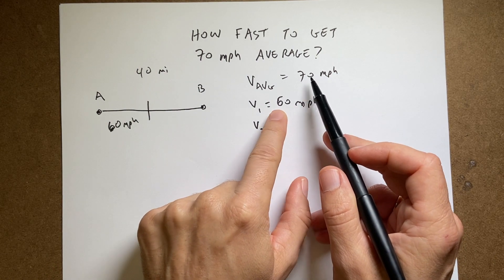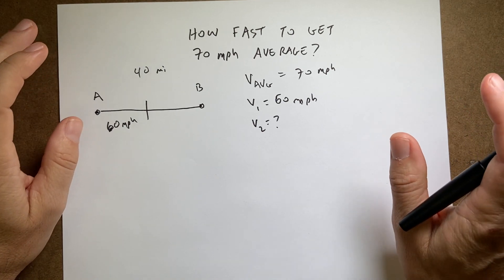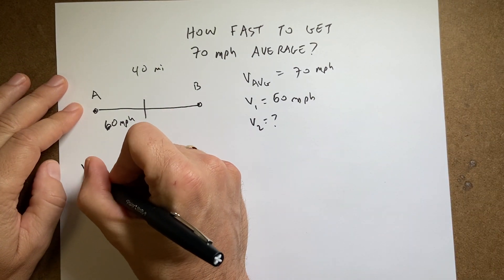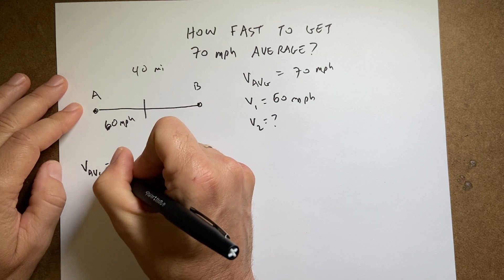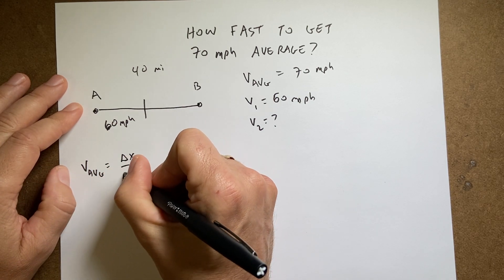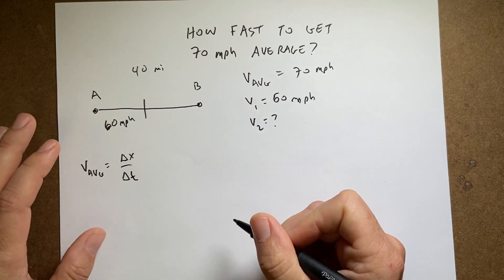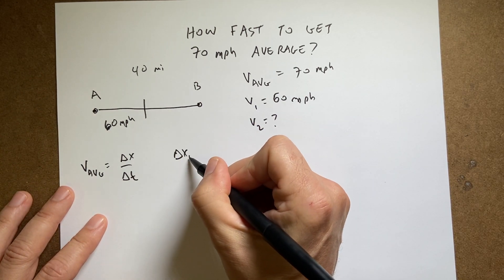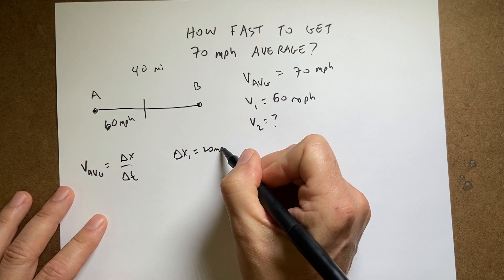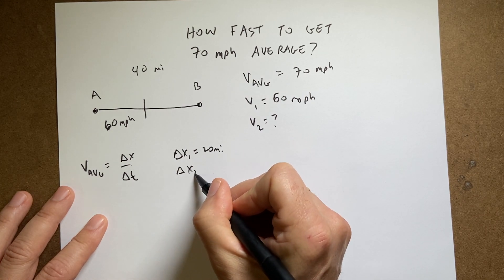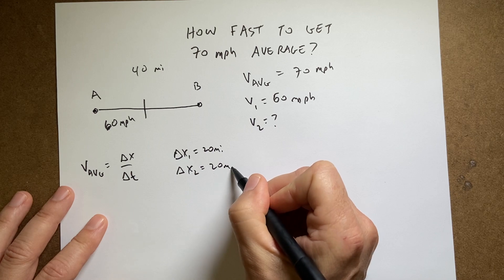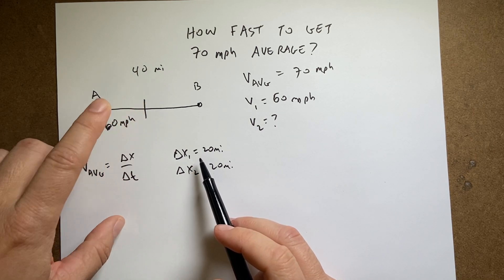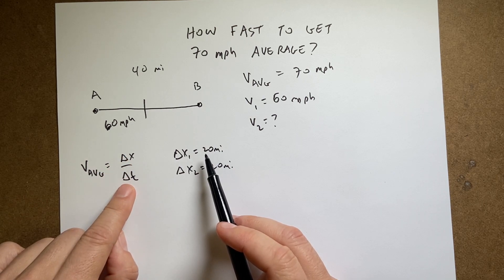Okay, well let's just check. We're just going to check. Let's start with the definition of the average velocity. V average is delta x over delta t. So I know that delta x1 equals 20 miles, delta x2 equals 20 miles. I also know the velocity so I can get delta x, but I need the times.